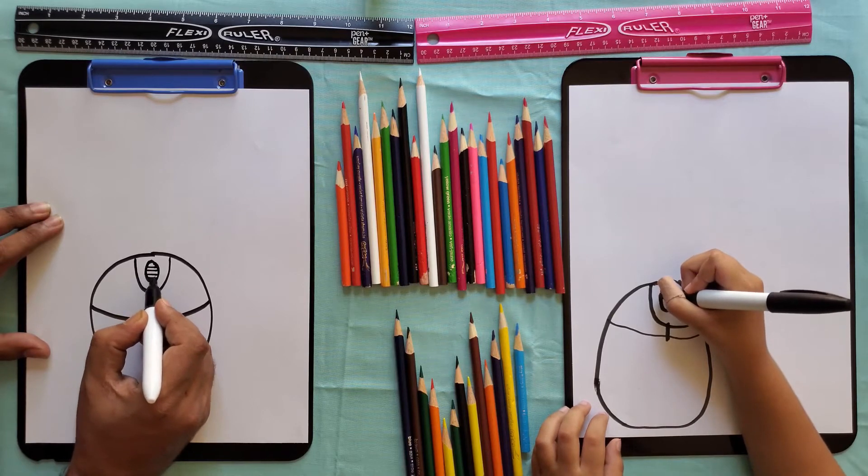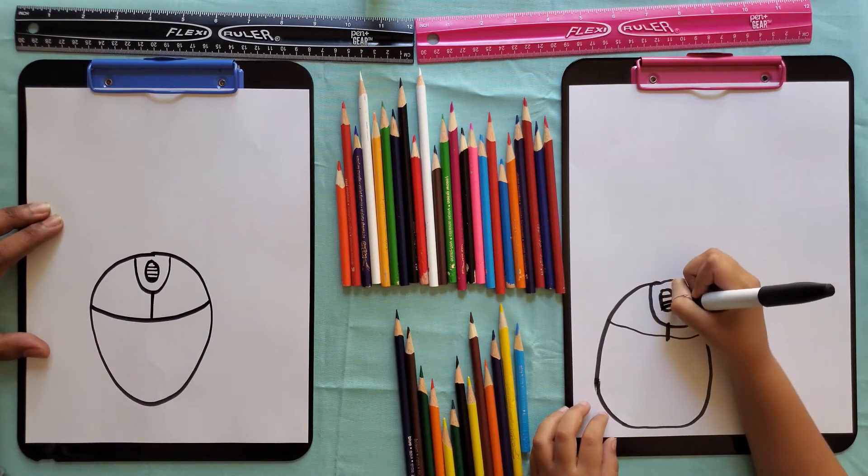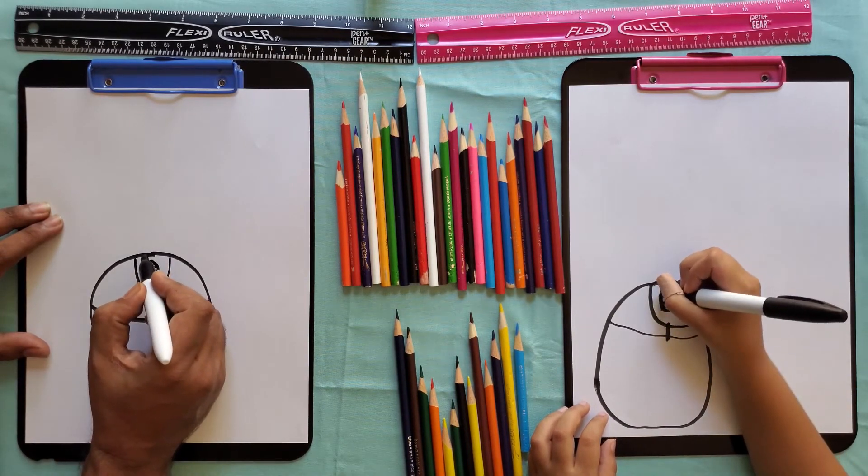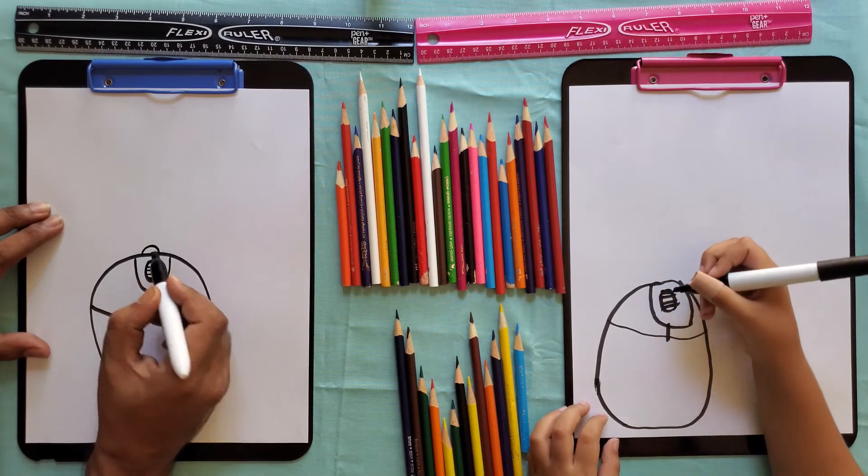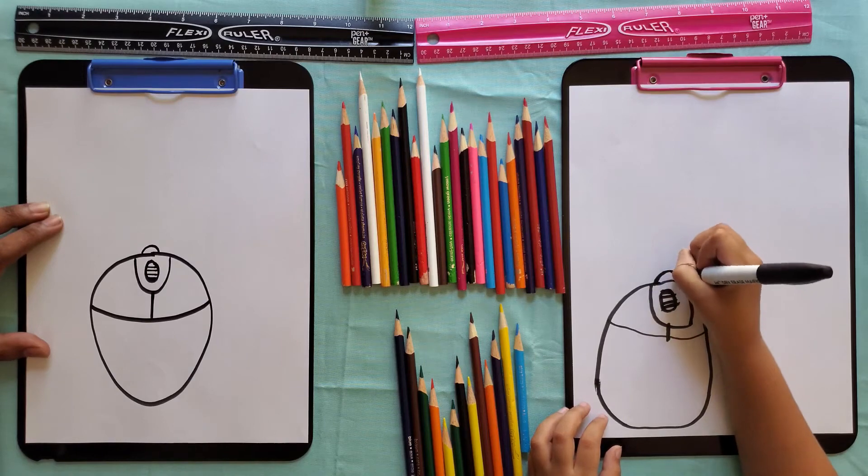And in that circle draw a line like this. Then here draw you on top.